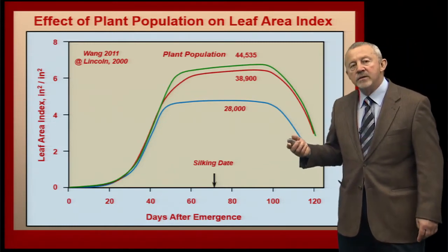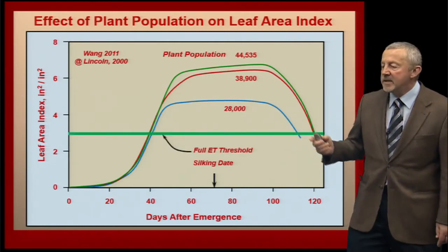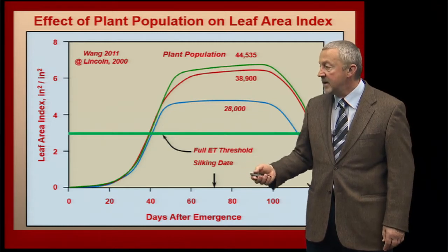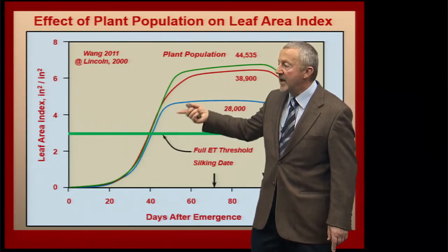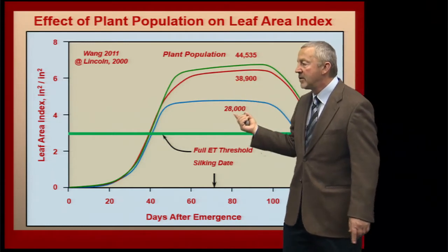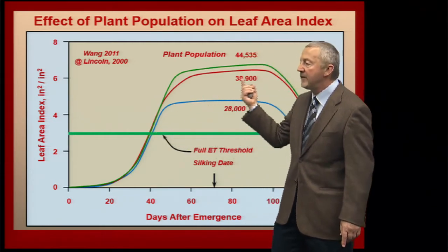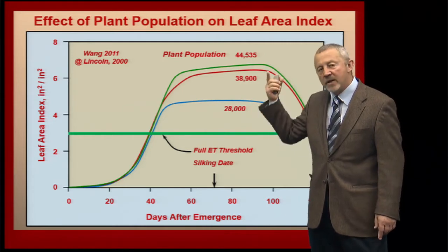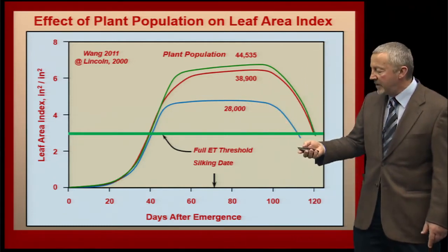As we look at crop water use from the perspective of plant population in corn, theoretically when the leaf area index of the corn plant gets above a threshold of 3.0, there's enough leaf area to transpire water at a full rate. Looking at plant populations of 44,000, 39,000, and 28,000, the big difference is when they actually close canopy — but they all have enough leaf area to transpire at a maximum rate. So under irrigated conditions, plant population rarely impacts water use very significantly.